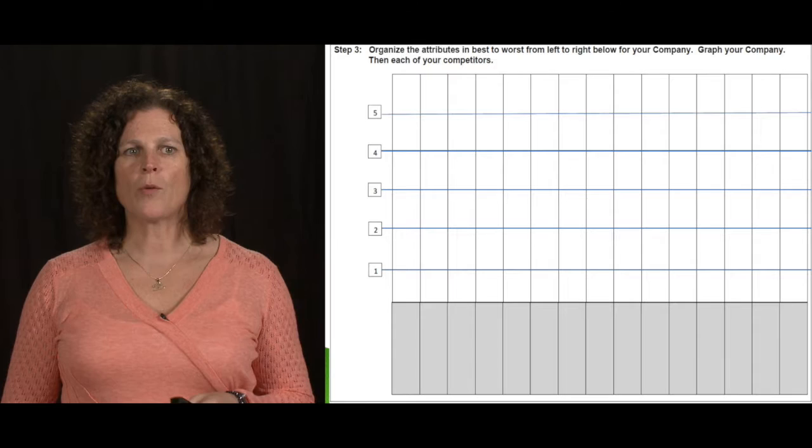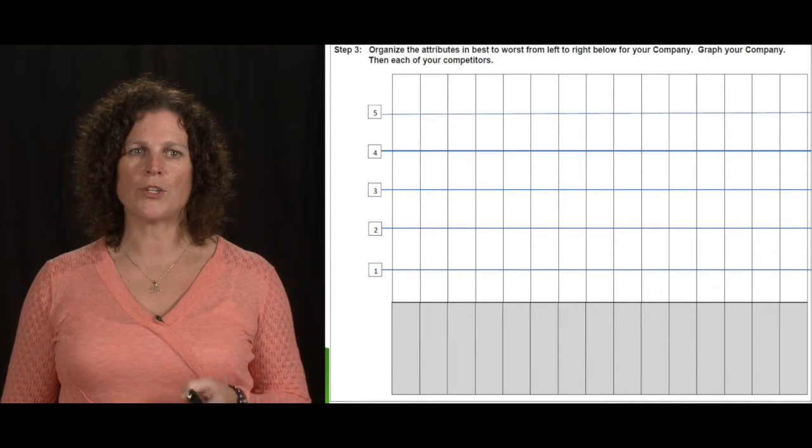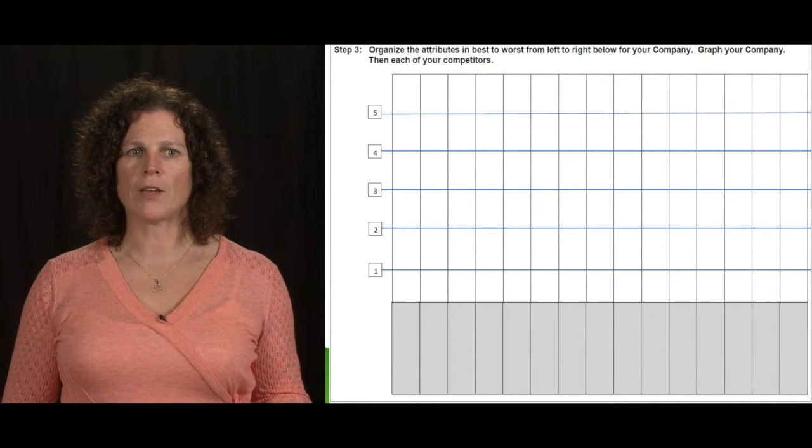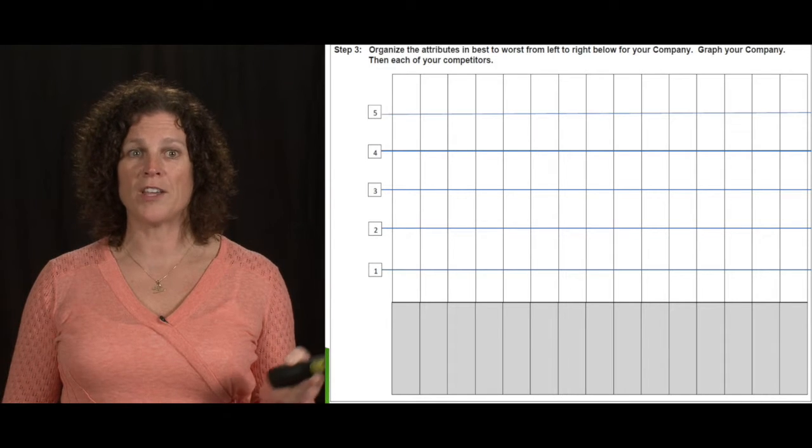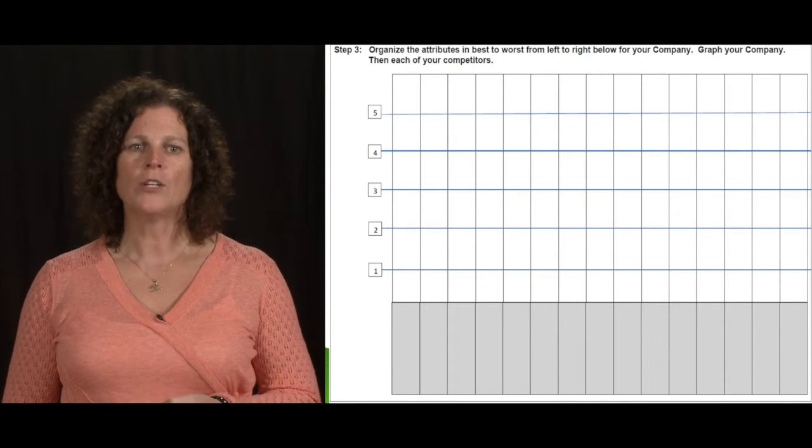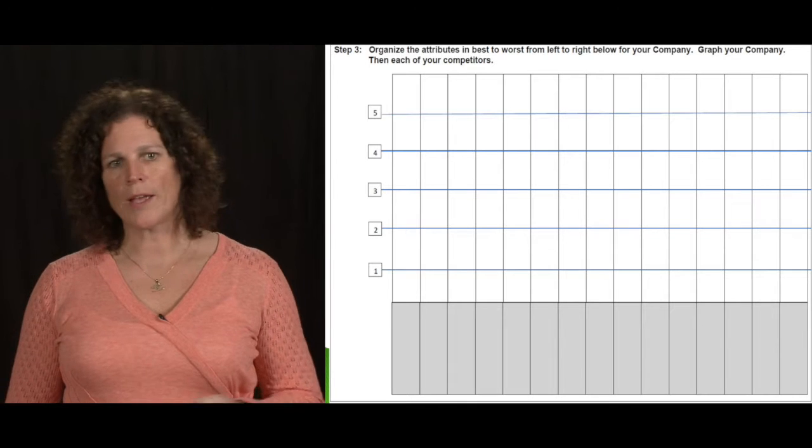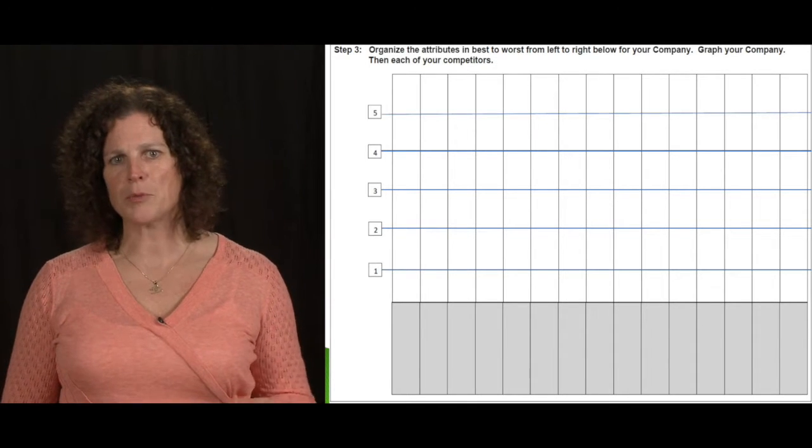Then what I want you to do is actually map your company onto the graph. So it should start, if you're going five, four, three, two, one, you start on the left-hand side up in the five category. You're going to work your way all the way down to the right-hand side. Your line will end up rating whatever those attributes as a one.